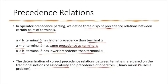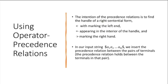The determination of correct precedence relations between terminals is based on the traditional notions of associativity and precedence of operators — the same notions you encountered in courses like C language or data structures. These precedence relations help us find the handle of the right sentinel form, so we know how to reduce.